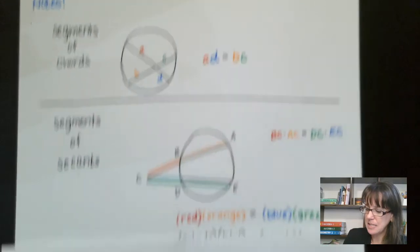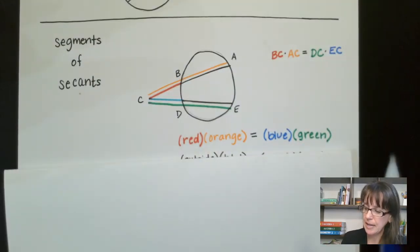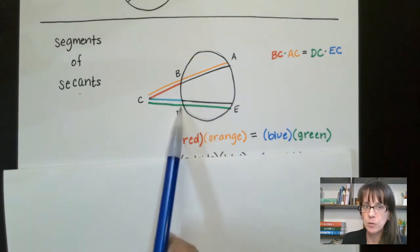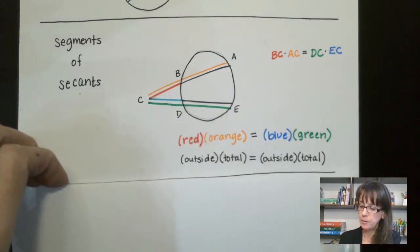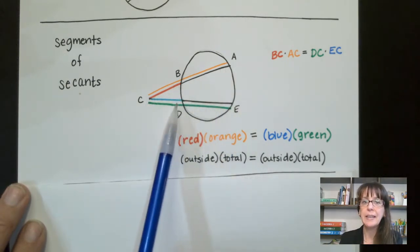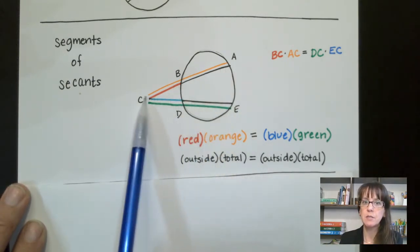We get another one. We get some secants. So for this one, what we're saying is outside times the total equals the outside times the total. So again, that's this outside bit times the total equals the outside bit times the total.